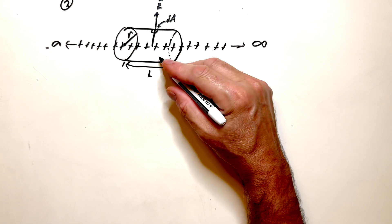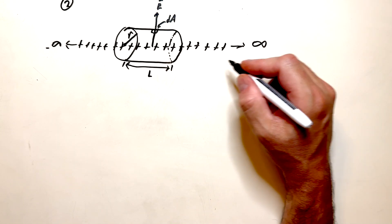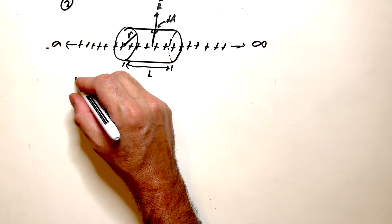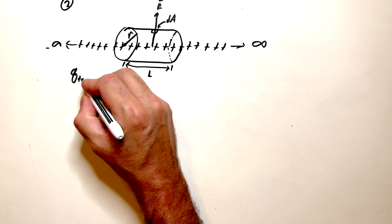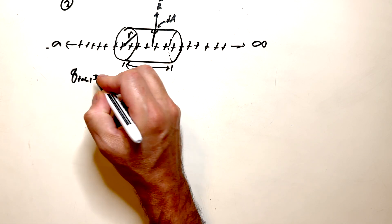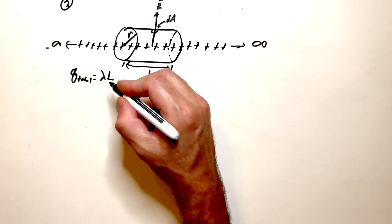So first, let's get Q total inside this cylinder surface. I'll write it here. So Q total, really Q inside, is just equal to lambda, the charge density, times L.